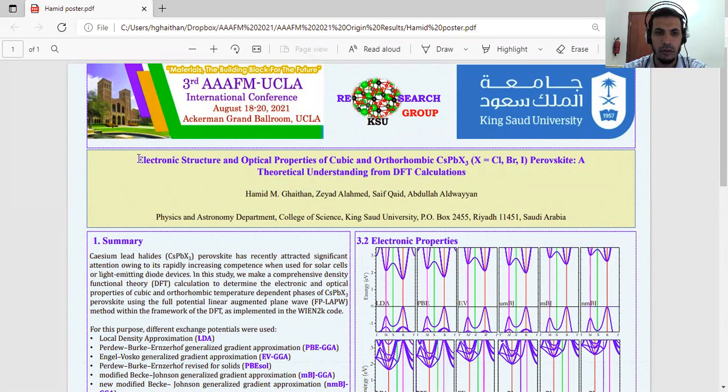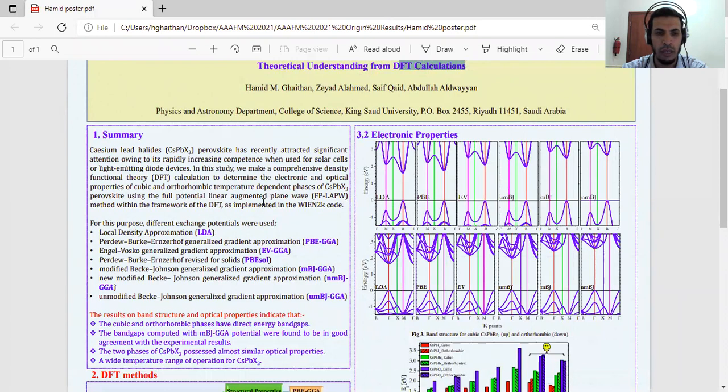Today I will present my work on electronic structure and optical properties of inorganic cesium lead X3 in two phases, cubic and orthorhombic. I will use DFT calculations in my work. As we know, cesium lead halide can be used for solar cells and light-emitting devices.